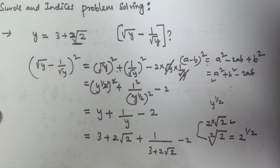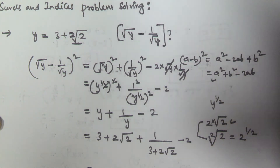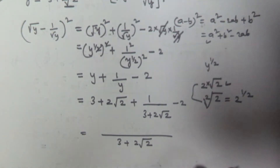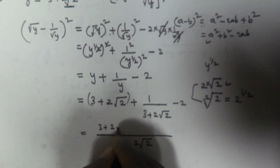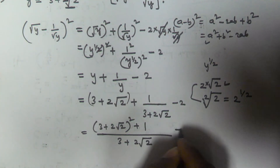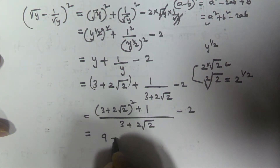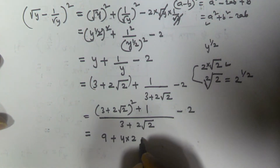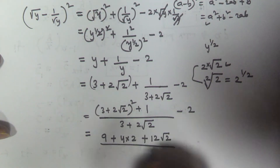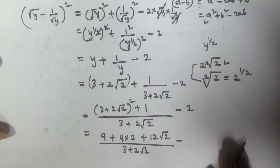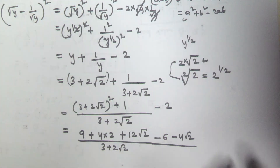Taking the LCM as 3 plus 2 root 2, the numerator becomes (3 plus 2 root 2) squared plus 1, minus 2 times (3 plus 2 root 2). Expanding (3 plus 2 root 2) squared: a square is 9, b square is 4 times 2 which is 8, and 2ab is 2 times 3 times 2 root 2 which equals 12 root 2. Distributing minus 2 gives minus 6 minus 4 root 2.